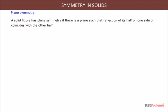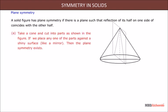Take a cone and cut it into parts as shown in the figure. If we place any one of the parts against a shiny surface like a mirror, then the plane symmetry exists, as we can see in the first animation.